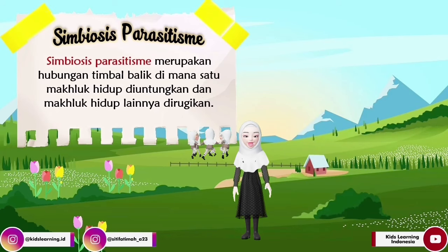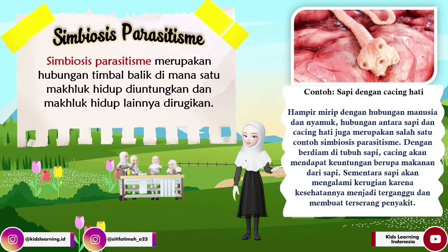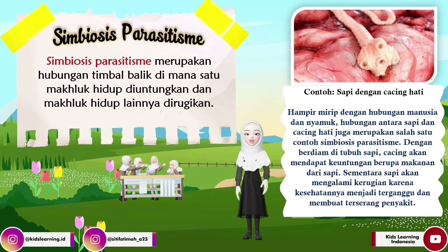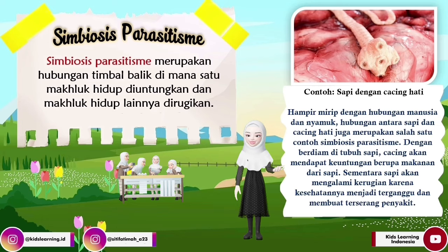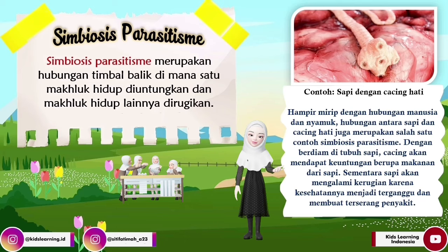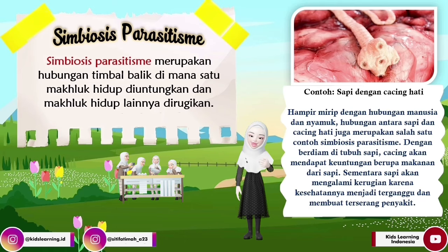Oke, selanjutnya contoh yang ketiga yaitu ada sapi dengan cacing hati. Hampir mirip dengan hubungan manusia dengan nyamuk, hubungan antara sapi dan cacing hati juga merupakan salah satu contoh simbiosis parasitisme. Dengan berdiam di tubuh sapi, cacing akan mendapat keuntungan berupa makanan dari sapi. Sementara sapi akan mengalami kerugian karena kesehatannya menjadi terganggu dan membuat terserang penyakit.